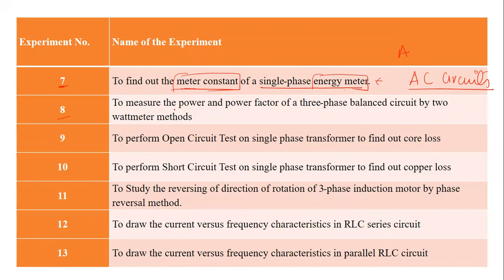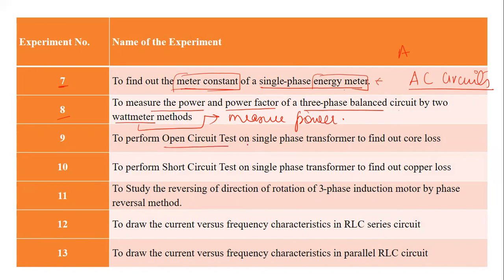In experiment number eight, we will understand what power is, how to measure it, what is power factor, and how to measure the power factor practically for a three-phase balanced circuit using a watt meter. Watt meters are instruments used to measure power. Then we understand how to perform the open circuit test on a transformer to measure the iron losses or core losses, and also the short circuit test to measure the copper losses, also known as winding losses.